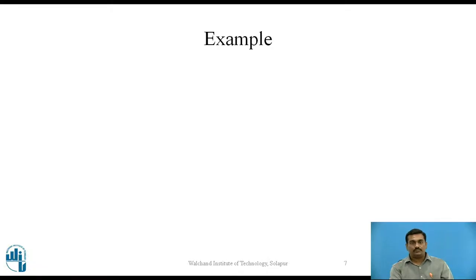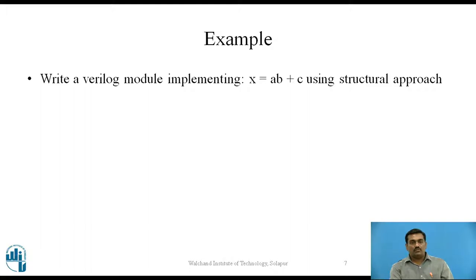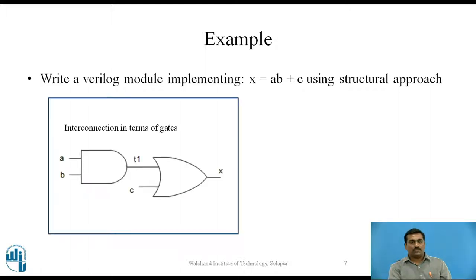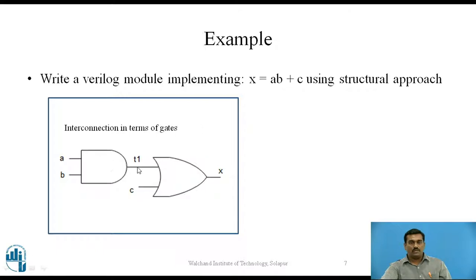Let us take one example. Suppose we want to write a Verilog module implementing the same equation x = a·b + c using the Structural approach. We have seen the Behavioural approach previously; now we will do the same thing using the Structural approach. For the given logic equation x = a·b + c, we can draw the circuit diagram using gate interconnections. This is the AND gate and this is the OR gate. The inputs are a and b, and its output is renamed T1. T1 is input to the OR gate, and the other input to the OR gate is c. At the output the signal is named x, implementing x = a·b + c.